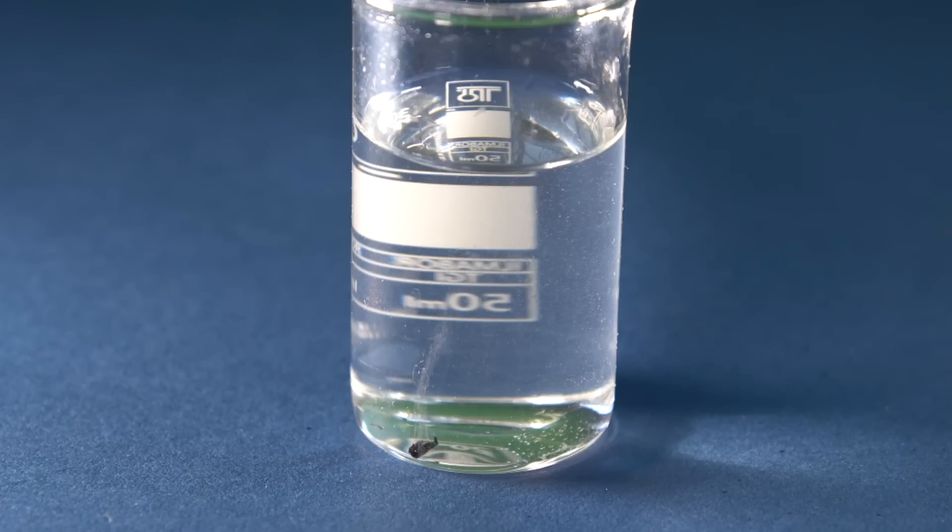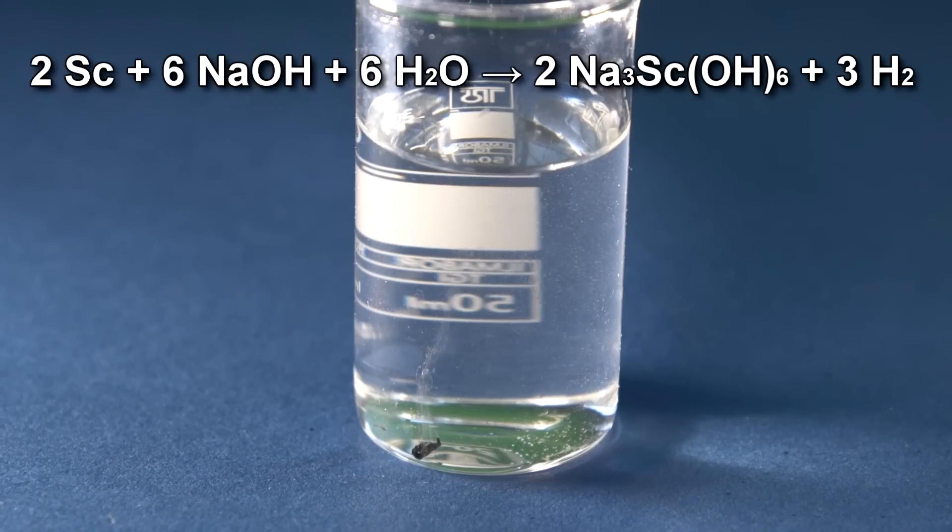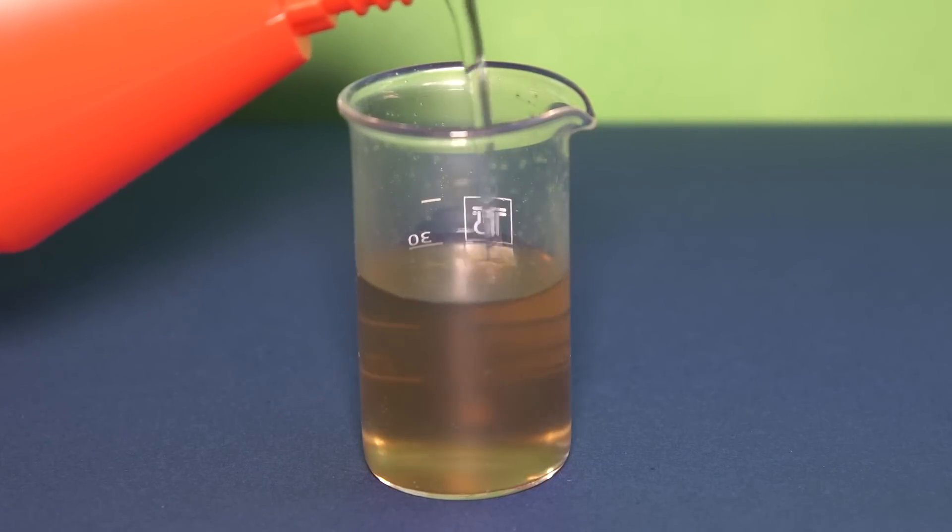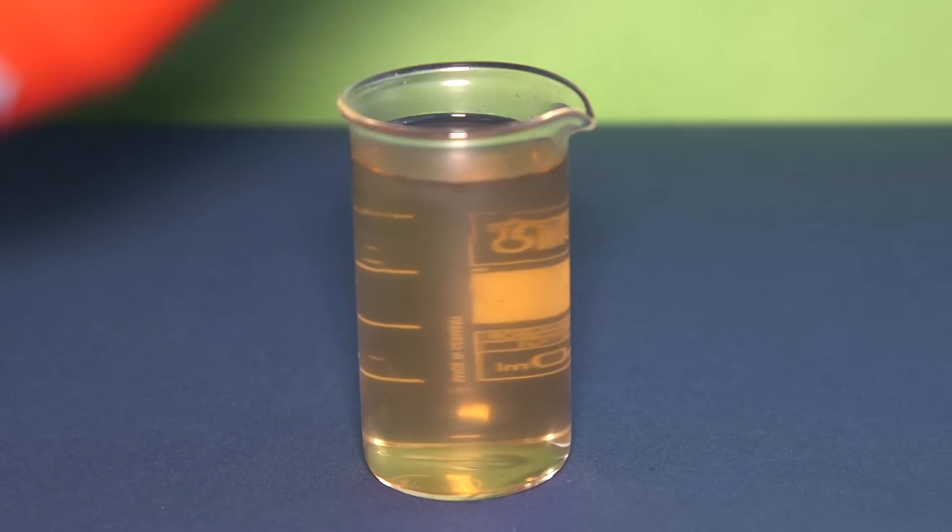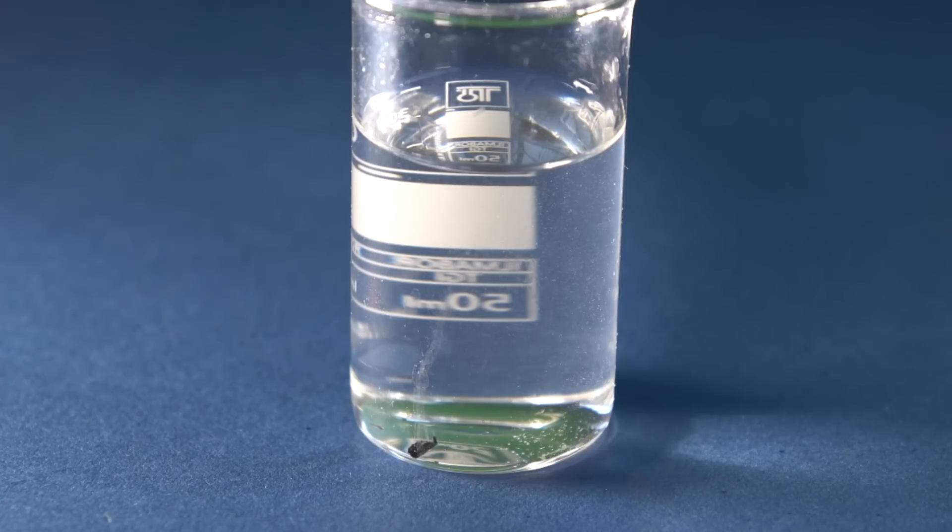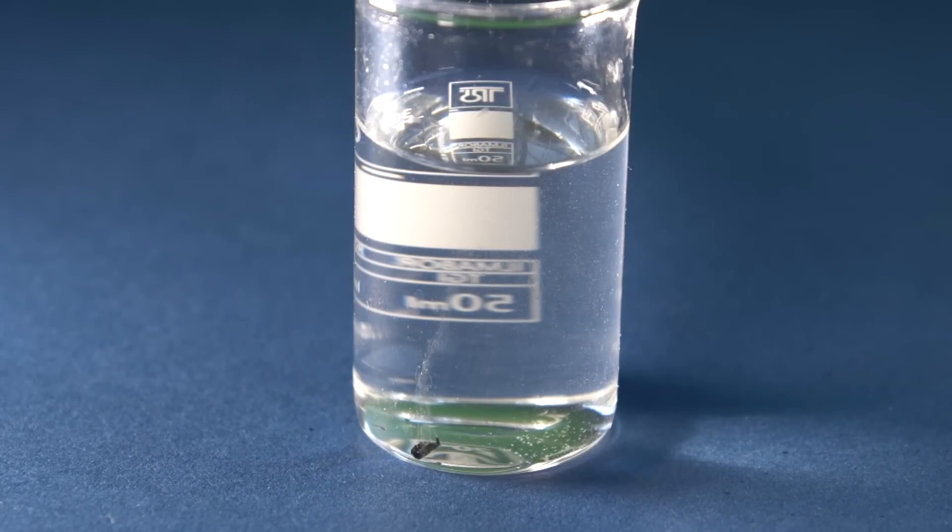Besides acids, scandium can also react with alkali to form scandate, the complex compounds of scandium. By this characteristic, scandium is quite similar to aluminum. It has the ability to react with acids and alkalis, which means it's amphoteric.